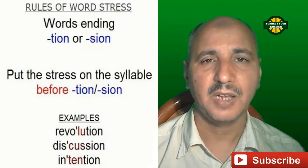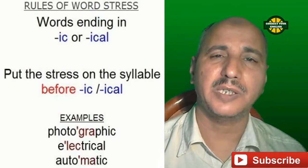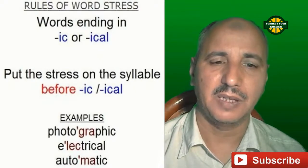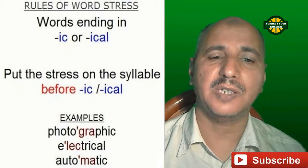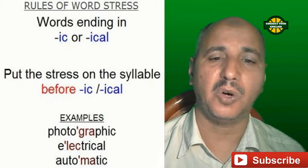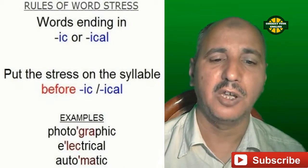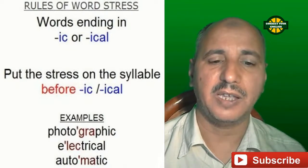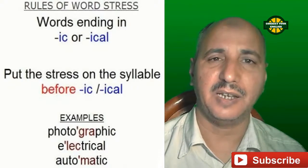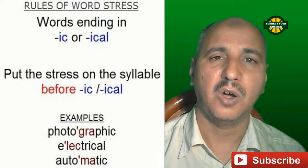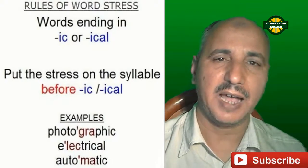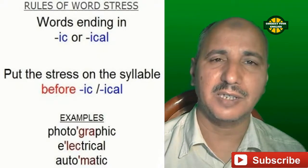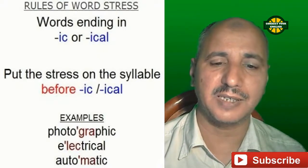Words ending in -IC or -ICAL: put the stress on the syllable before -IC or -ICAL. For example: 'photographic,' 'electrical,' 'automatic.' As you see on the screen, the letters in red are the syllables before -IC and -ICAL.